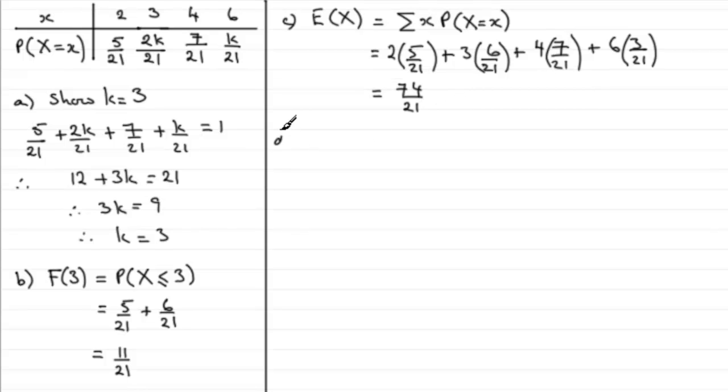Now in part d we've got to work out a similar kind of value, E of x squared. E of x squared is always equal to the sum of your observed values squared times the probability of each of those observed values. So we've got to do really much the same kind of thing as what we did up here, only this time we square each of these observed values. So we've got 2 squared multiplied by 5 over 21, the probability,